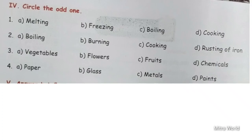Question number 4, options are: paper, glass, metals, paints. Paper, glass, and metals are all recyclable waste. Paints are toxic waste. So the answer is Option D, paints. Okay children, now check your answers.